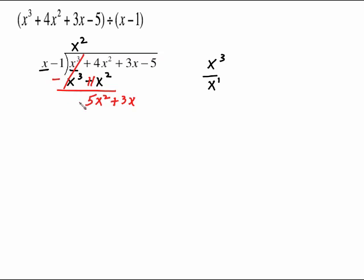First into the first: 5x squared divided by x. Use your exponent laws — that will give us a positive 5x. Multiply your 5x times the whole divisor, which gives us 5x squared minus 5x.